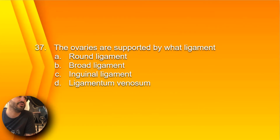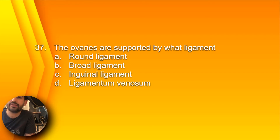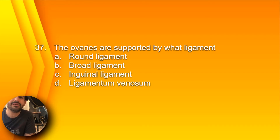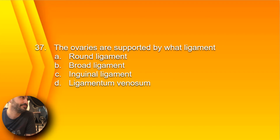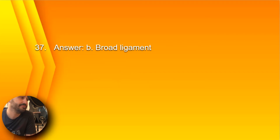Question 37: The ovaries are supported by what ligament? A, round ligament; B, broad ligament; C, inguinal ligament; or D, ligamentum venosum? The answer is B, broad ligament.